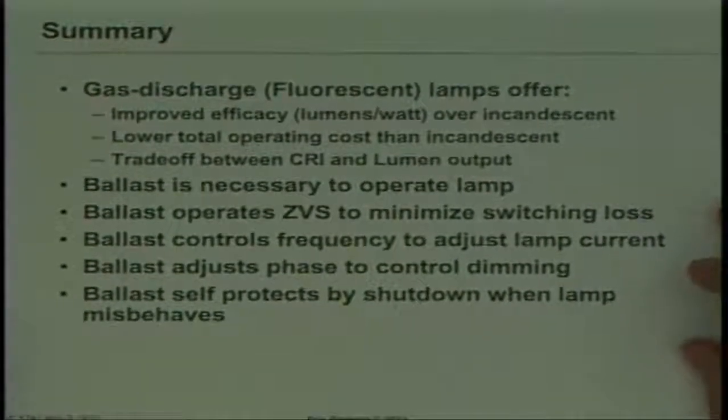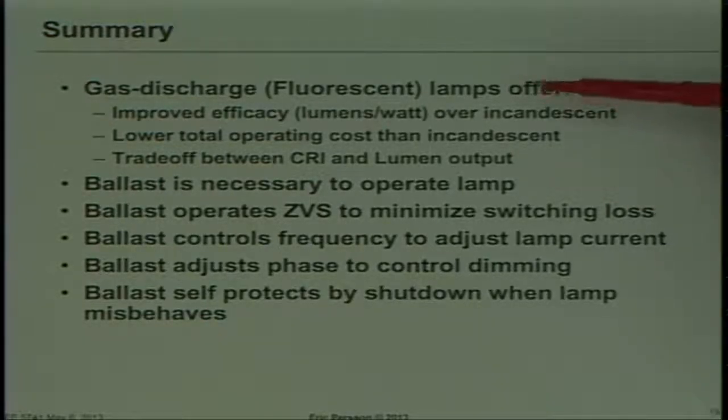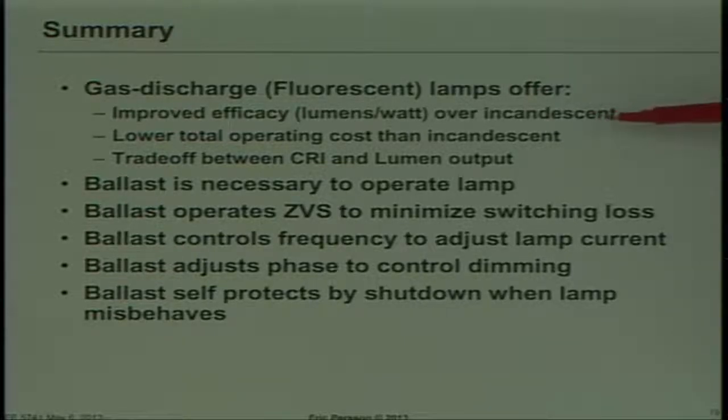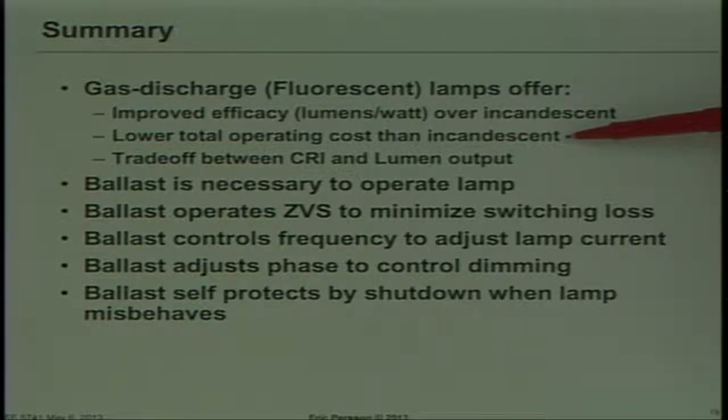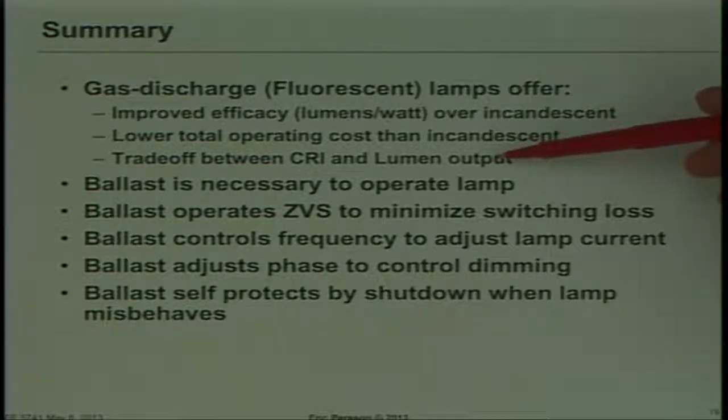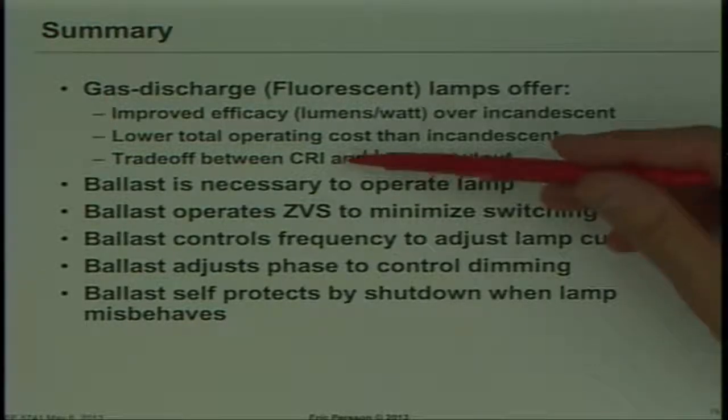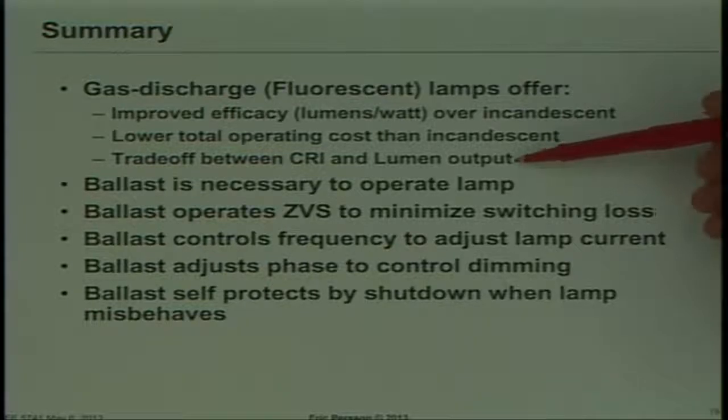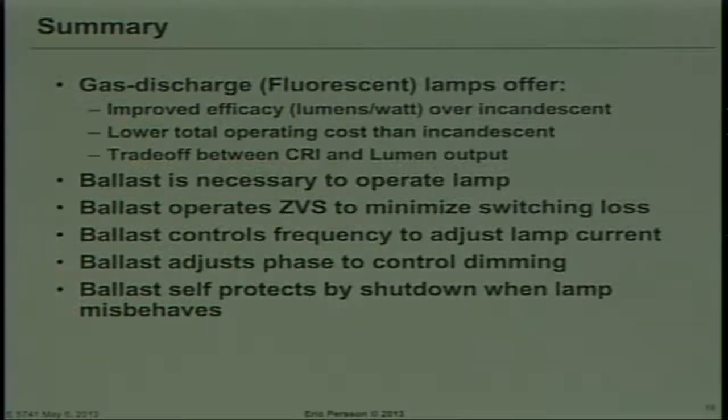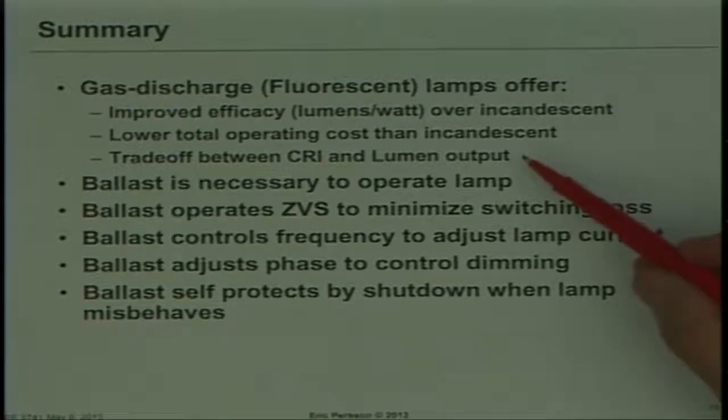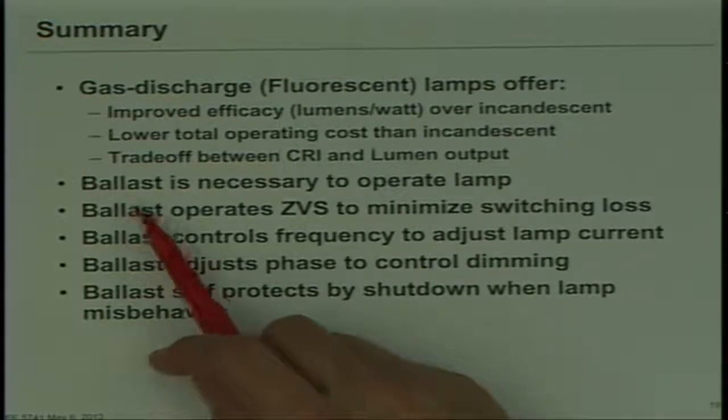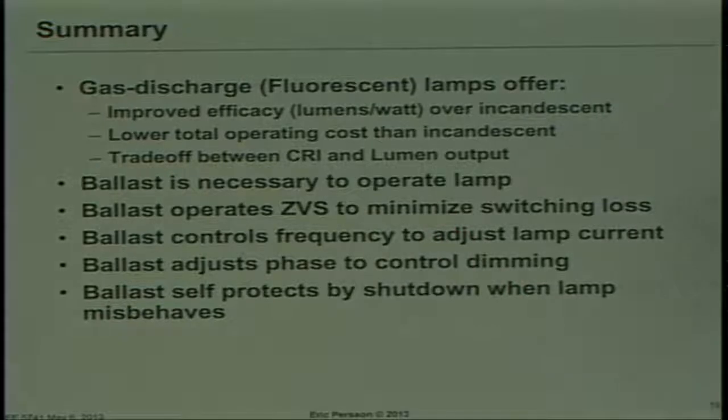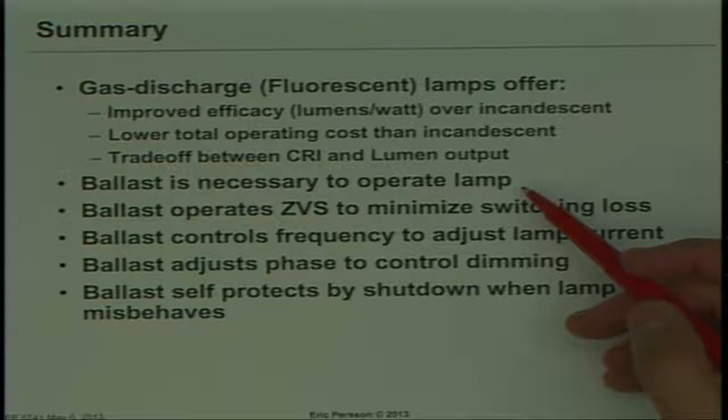On the fluorescent lamps, summary is the fluorescent lamps give you improved efficacy, which is lumens per watt compared to incandescent. Theoretically, have a lower total operating cost than incandescent if you amortize the initial high cost over the longer lifetime. But there's a trade-off between color rendering index, how your eye perceives the light, and the lumen output. If you've seen what we call the cool fluorescent lamps that have the highest output, they're not very pleasant to look at. It's a kind of a harsh light characteristic. That's the trade-off. The lamps need a ballast in order to operate because of all the operating modes. They have to go through a preheat mode, a strike mode, and an operating mode.